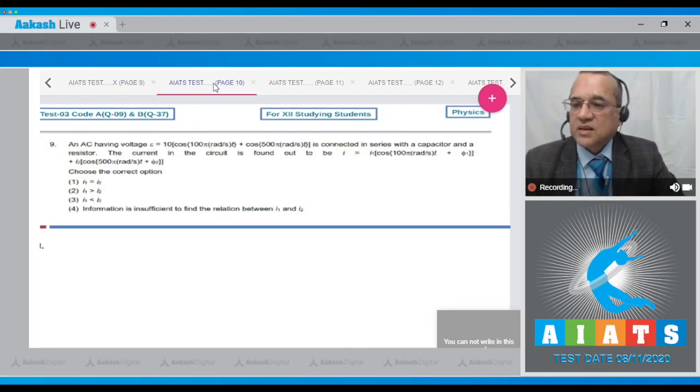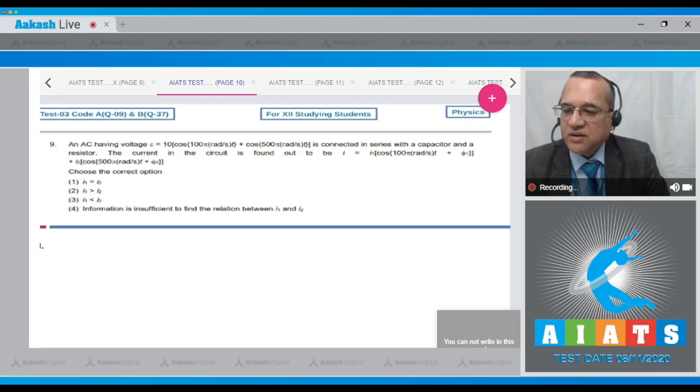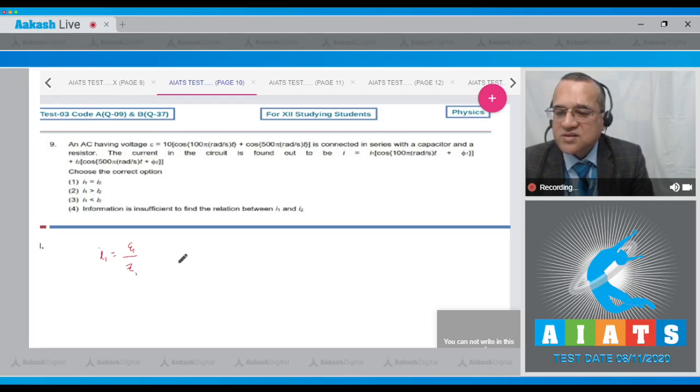Let us go to the next problem. Question number 9 says that AC circuit having voltage EMF is equal to 10 cos of 100 pi t plus cos of 500 pi t is connected in series with a capacitor and a resistance. The current in the circuit is found to be equation I is equal to I1 cos of 100 pi t plus phi 1 plus I2 cos of 500 pi t plus phi 2. We have to find the current, and the current will be equal to the EMF divided by the impedance. And the current I2 will be equal to EMF divided by impedance.